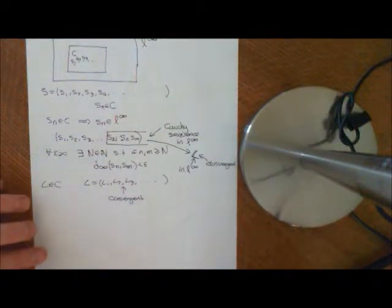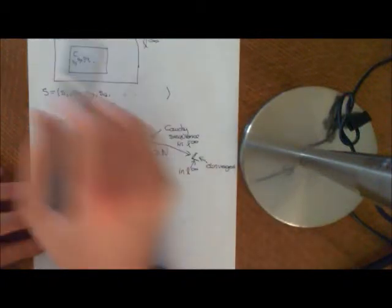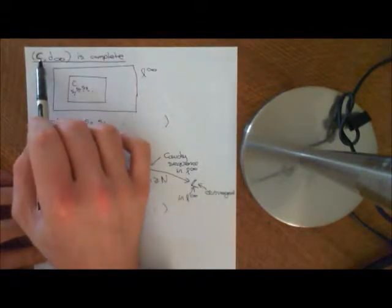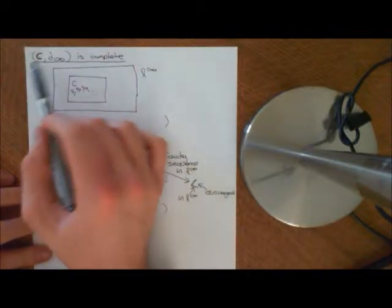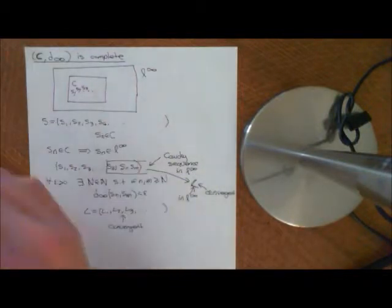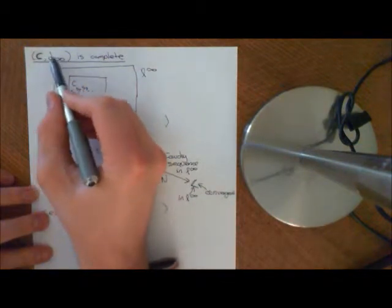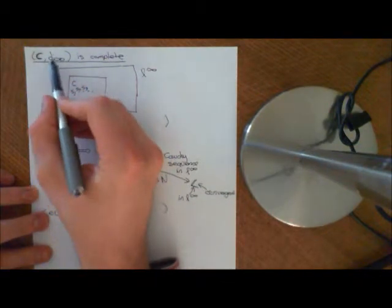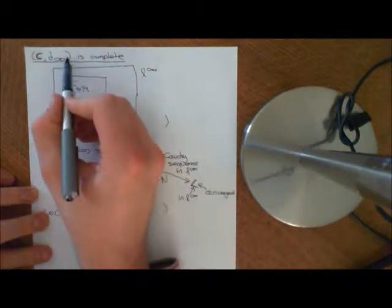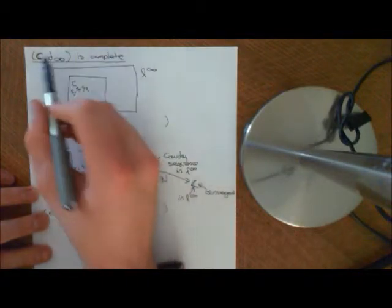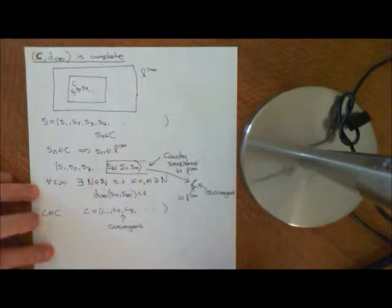We are trying to show that the metric space C, which is the set of all convergent sequences of real or complex numbers, when imbued with the d-infinity metric, forms a complete metric space.